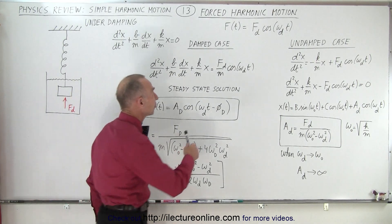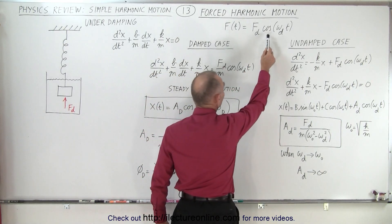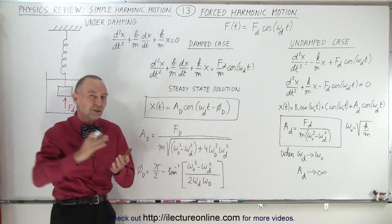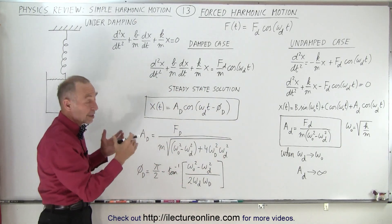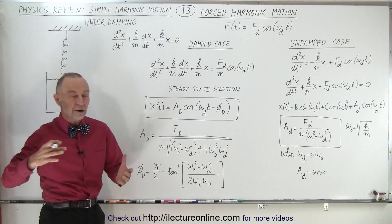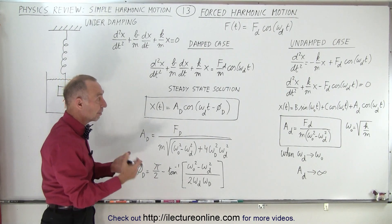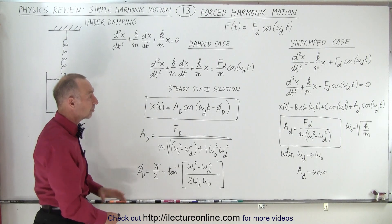So we have a force that has a constant times the cosine of omega sub d. Now, omega sub d is the angular frequency of the driving force, which may be different, and most likely will be different, from the natural angular frequency of the simple harmonic oscillator.